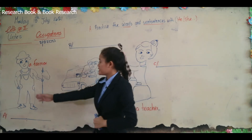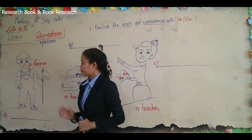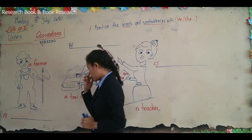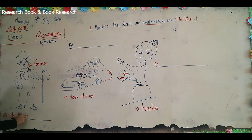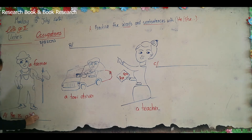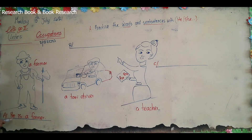The first picture — is it 'he' or 'she'? Very good, it's 'he'. So the sentence is: he is a farmer. Repeat after me: he is a farmer. Good, one more time: he is a farmer.